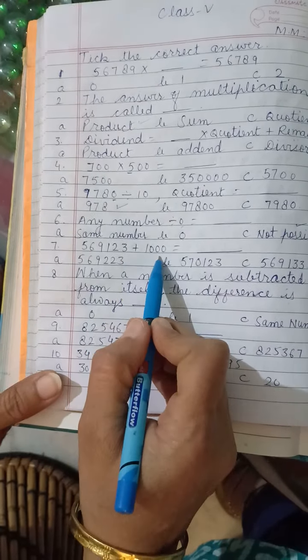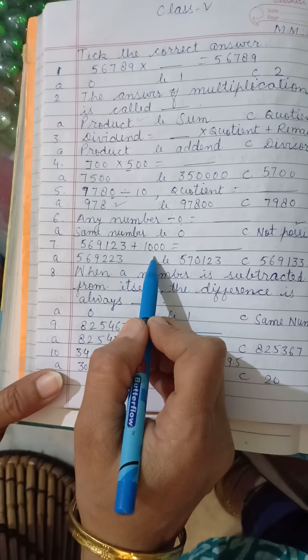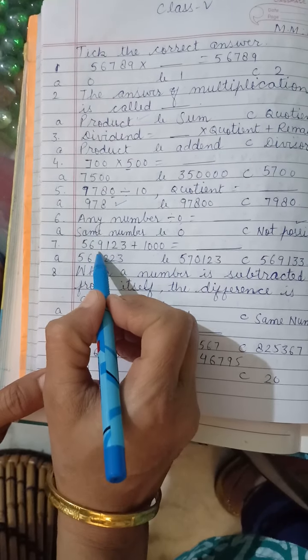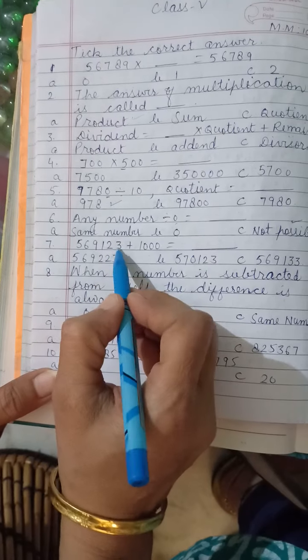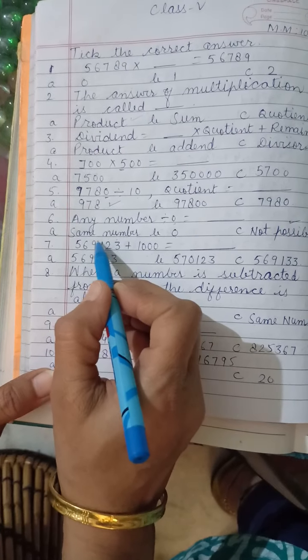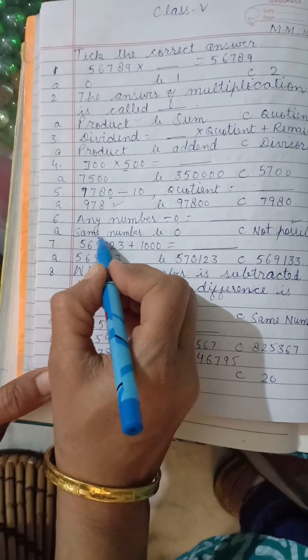This number plus 1000. Plus 1000 means the digit at 1000 place will be increased by 1. 1 stands 1000. This is the 1000 place digit.